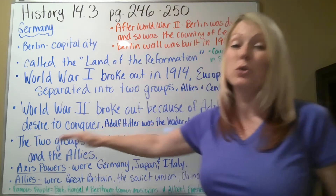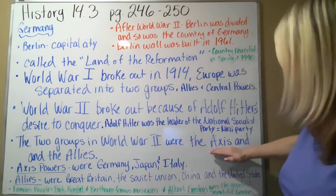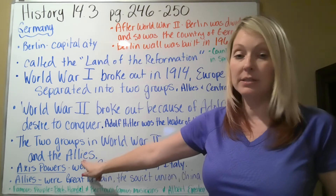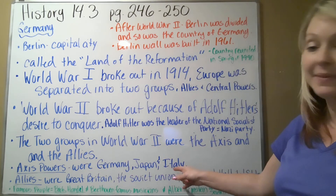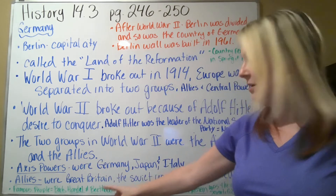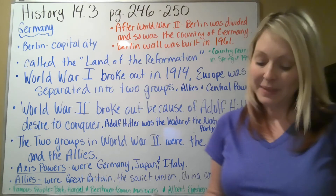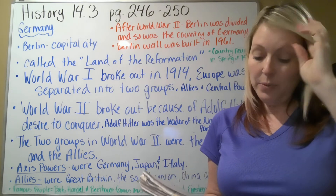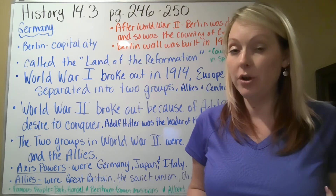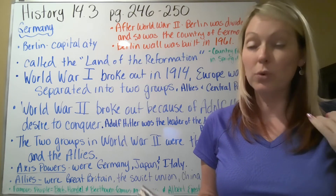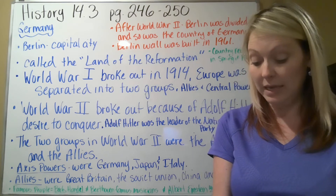In World War Two, the world again broke into two groups. The Axis powers were Germany, Japan, and Italy. The Allies were Great Britain, the Soviet Union, China, and the United States. This war spread across three continents — Africa, Asia, and Europe — and became a horrific war that most of the world was involved in.